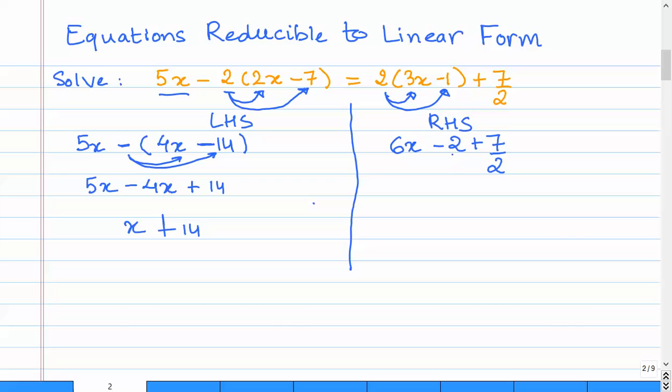Now what we could do is to simplify it a bit further, this side, by taking the LCM of 1 and 2, which is 2. So we have 6x minus, this one becomes 4 and plus 7 divided by 2, or 7 minus 4 actually gives us 3. So we have 6x plus 3 by 2.